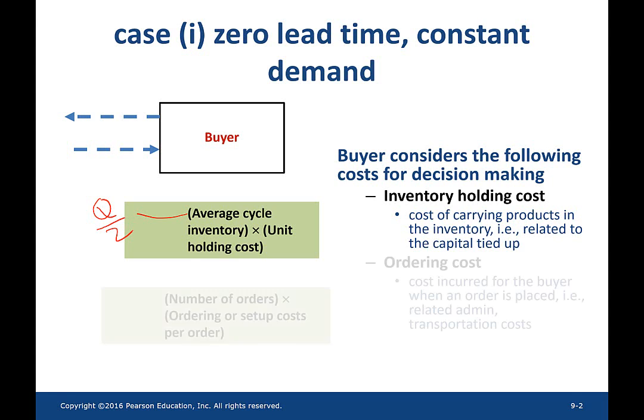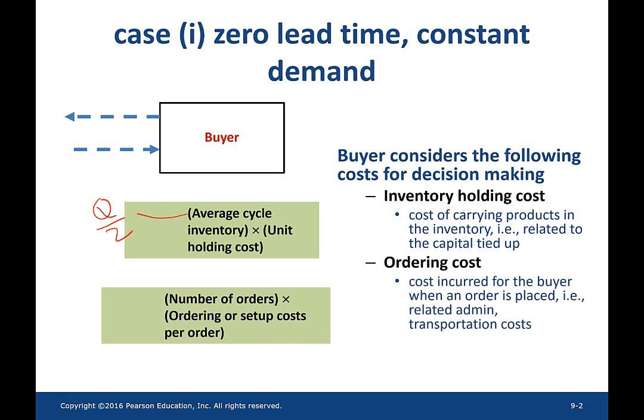The second cost the buyer should consider is the ordering cost — the cost incurred when an order is placed. This cost is related to administrative cost, transportation cost, and so on. This ordering cost is proportional to two quantities: the number of orders placed and the ordering cost per order. The last one is the purchase cost, which is directly proportional to the purchase price and the quantity purchased.